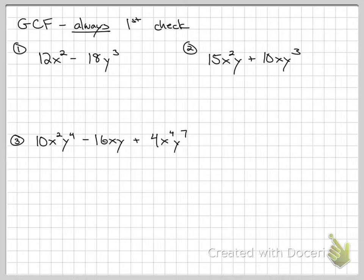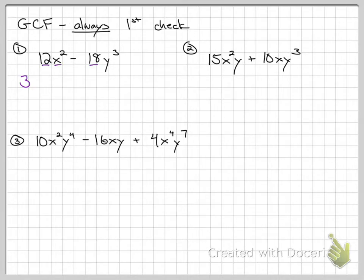GCF — two terms. It's always the first thing we check for. In example one, 12 and 18: what's the biggest number that divides into both? They're both divisible by two and by three, so three is going to be part of our GCF. It gets written in front. Then look at the variables: x squared and y don't have any letters in common, so three is my whole GCF. Divide everything by the GCF: 12x² divided by 3 gives 4x², and 18y³ divided by 3 gives 6y³.